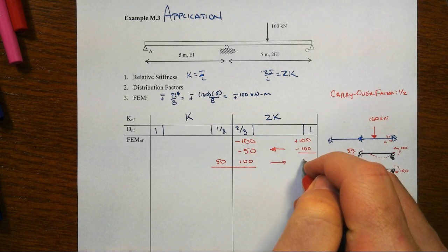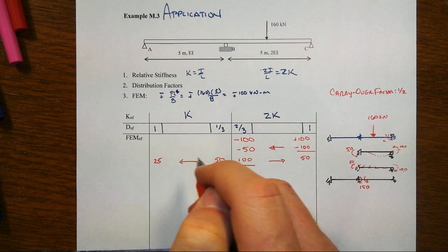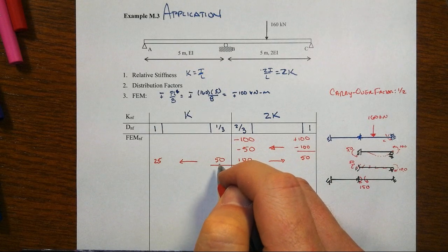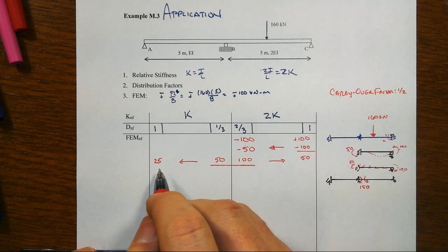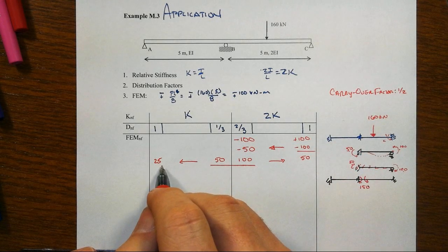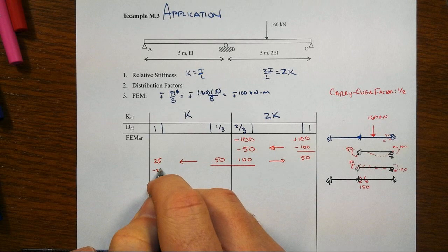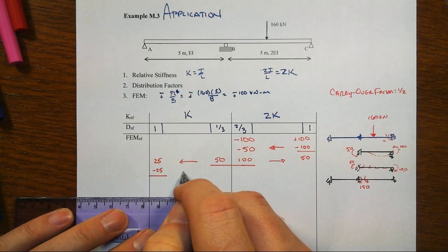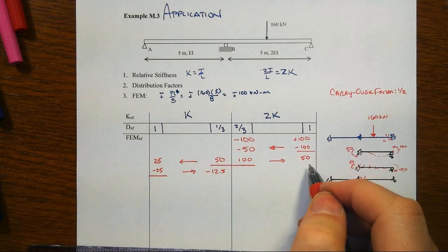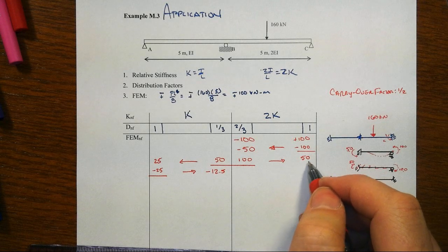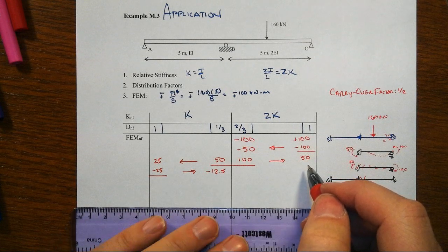We shoot across carryover effects, which are whatever that member end moment is times a half, the carryover factor in this case. Yes, there are times the carryover factors don't have to be one-half. So that pops over. General case, that will always be the case. Pops over. Now let's release this one. That's a minus 25. That pops back over at minus 12.5. Now we have a choice here. We could have gone back over to the far right and done something here.